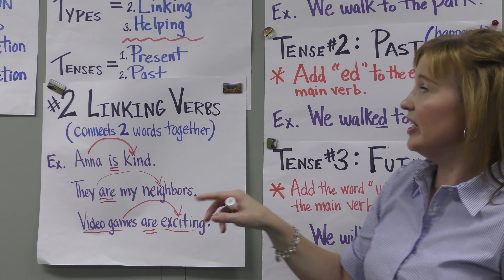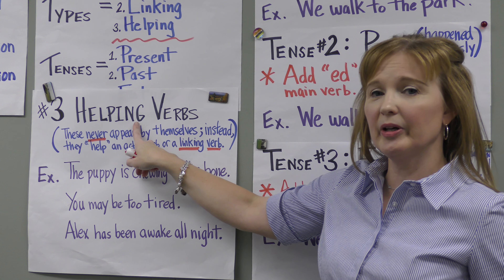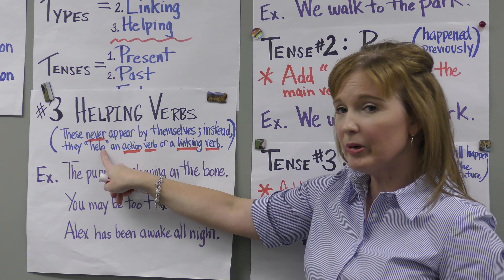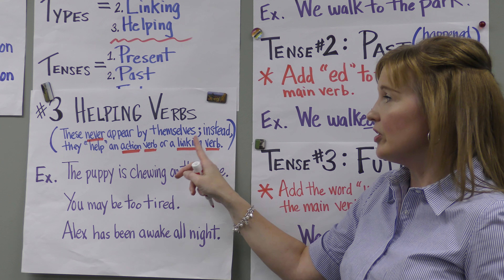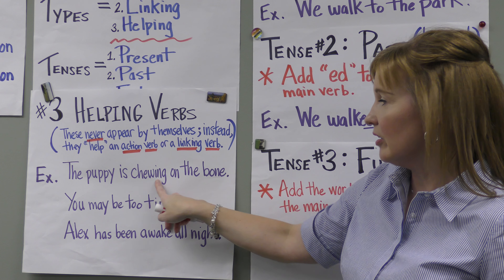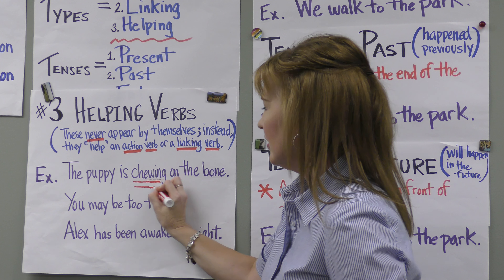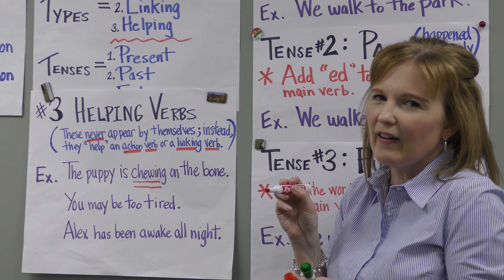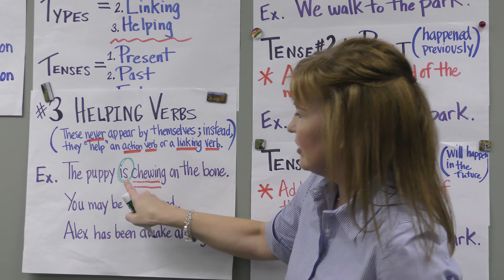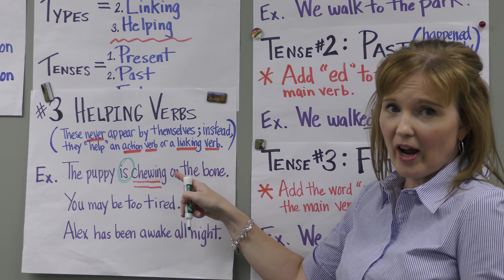Helping is another category, but it's unique. The thing about helping verbs is they never appear by themselves. You can't just have a helping verb all alone — it has to help an action verb or a linking verb. First you find the action verb or linking verb, and then you see which verbs are helping it out. The puppy is chewing on the bone. Chewing is an action — that is the main verb. Then you look at this sentence and think: is there something that looks like a verb that's helping out 'chewing'? You've got the word 'is.' So 'is' is helping the action verb 'chewing.' This whole thing is called a verb phrase because you have more than one verb.